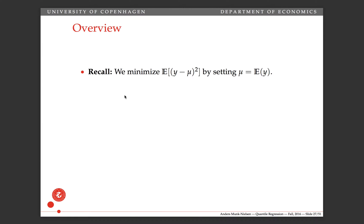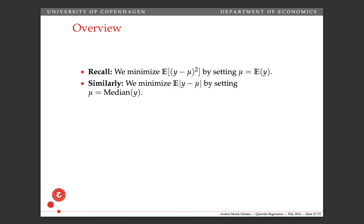The intuitive motivation goes like this. If you want to minimize the expected squared residual with respect to some mu, you solve that by setting mu equal to the expectation of y. Similarly, if you want to minimize the absolute deviation, the absolute residual, then you set mu equal to the median. More generally, if you weight the residual a little bit more depending on whether it's on the positive or negative side, then minimizing that will give you not the median, but one of the other quantiles.